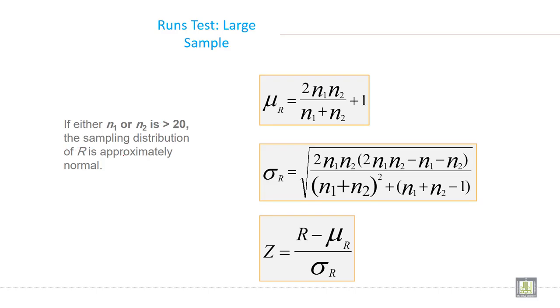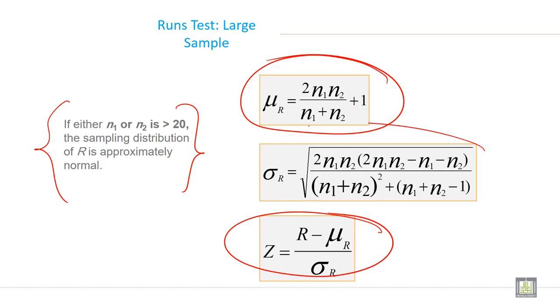The sequence of no flaws denoted by N and flaws denoted by F is shown in an upcoming slide. Using alpha 0.05, the quality controller tests to determine whether the machine is producing randomly, the flaws are occurring randomly. If either N1 or N2 is greater than 20, the sampling distribution of R is approximately normal. This is the decision rule.